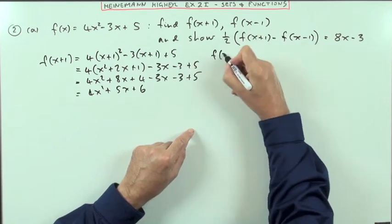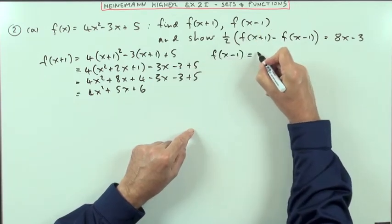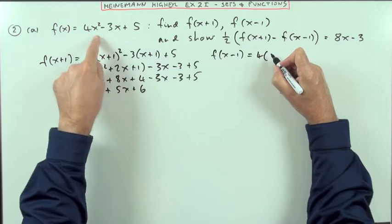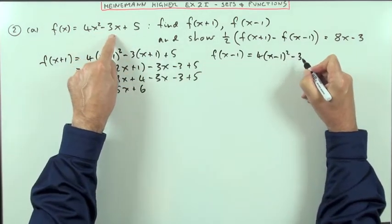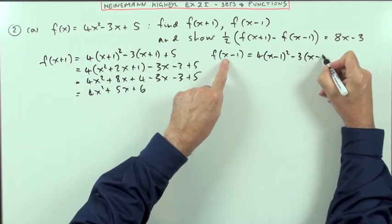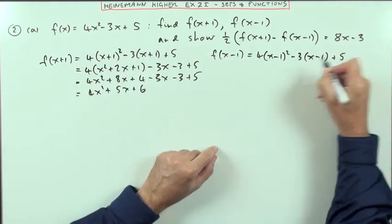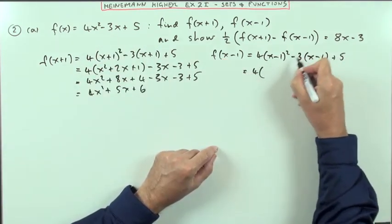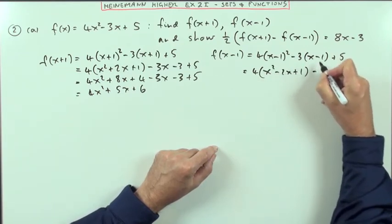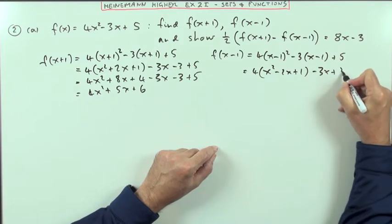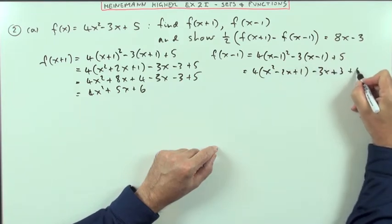Then it says, find f(x-1). Well, that'll be the same thing. It'll be 4 times the thing squared, in this case x-1, minus 3 times the thing, x-1, plus 5. So it's 4 times, square the bracket, square the first, twice the product, square the last, minus 3 times the x, and then that'll be plus the 3, negative negative, plus 5.